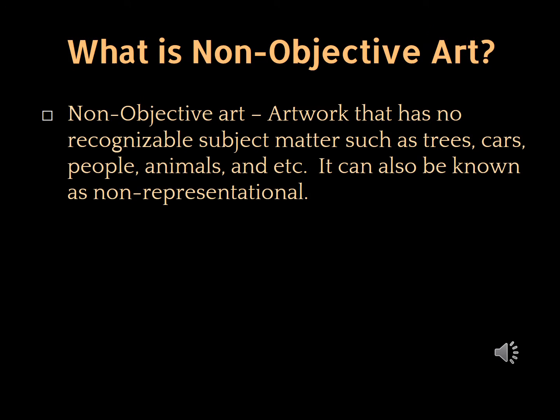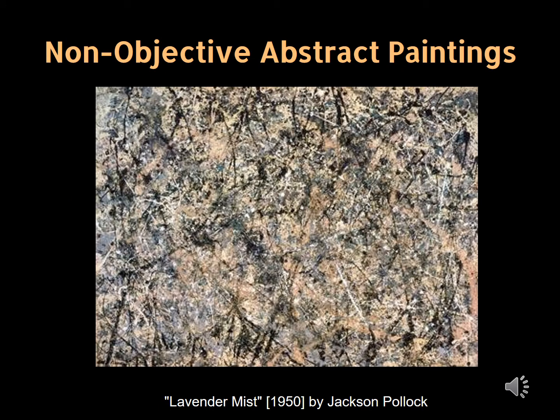Now to our last art form: Non-Objective Art. Non-Objective Art is artwork that has no recognizable subject matter such as trees, cars, people, animals, etc. It could also be known as non-representational art. This is a great example: a non-objective painting by Jackson Pollock titled Lavender Mist. He used the technique of splattering and dripping paint on the canvas. You are not able to recognize anything in his composition. He used lines, texture, color, and movement to express his artwork.